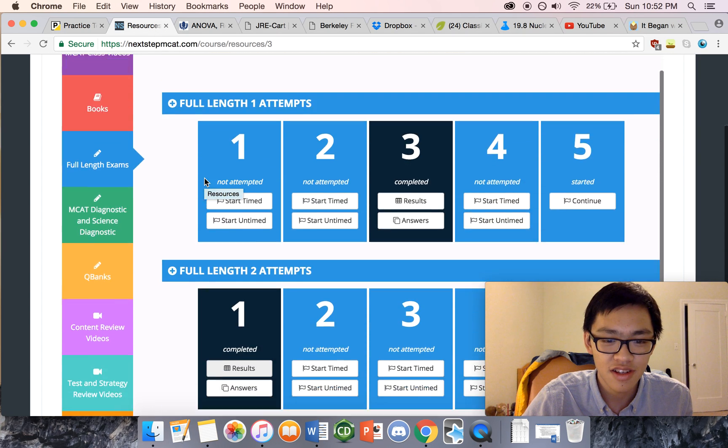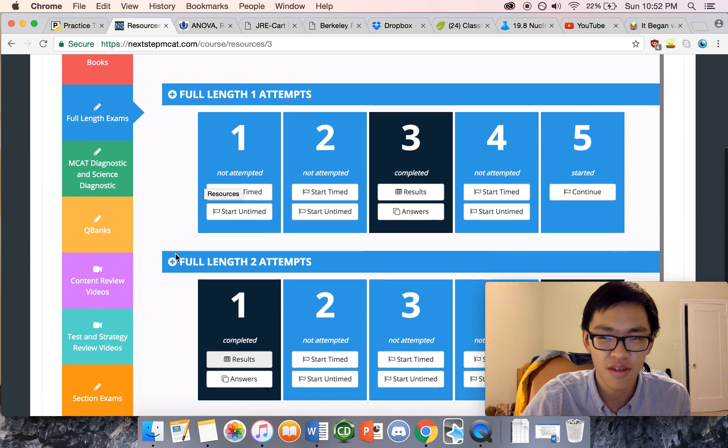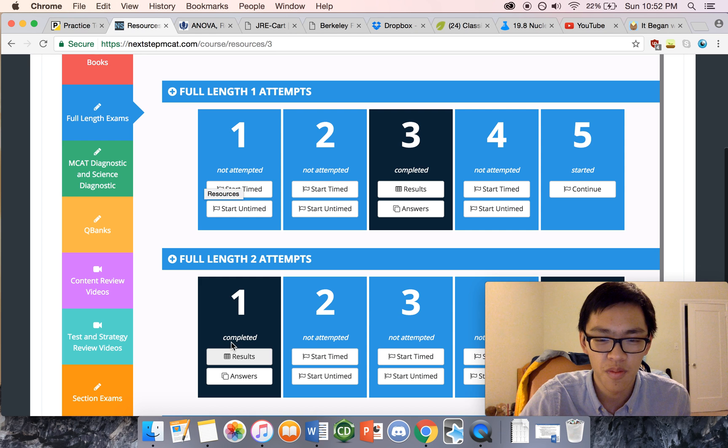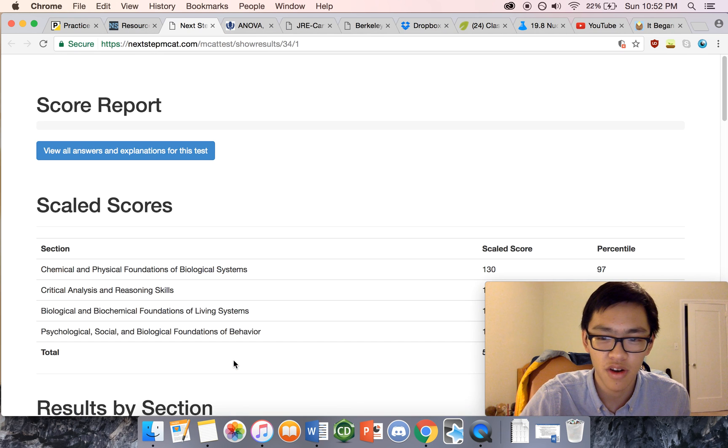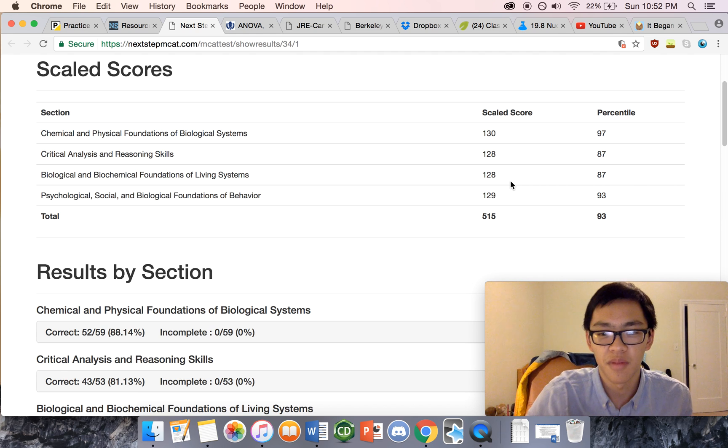Today I took the full length exam two, which I think was actually probably a little bit easier than the first one. Not quite sure why, but I just did a little bit better on CARS today. Here's my score. My CARS went up a little bit but my biology went down, so overall it stayed about the same. My scores aren't going up or down and that's what I heard is characteristic of NextStep.